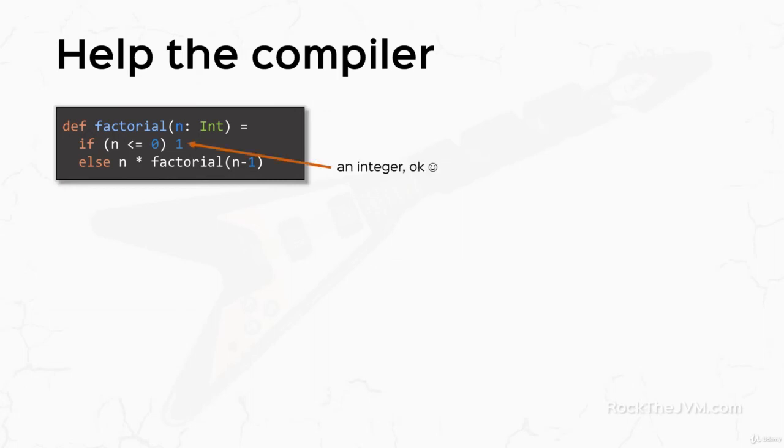So the compiler has to analyze both. The first branch returns an integer, which is fine. The other branch returns a product between an int, which is also fine, and the recursive call of factorial, of whose type the compiler is not aware.